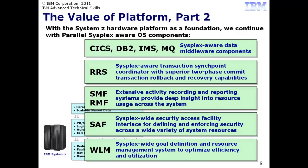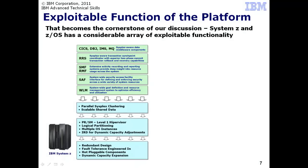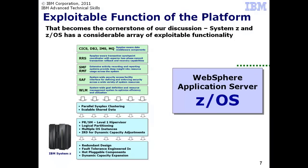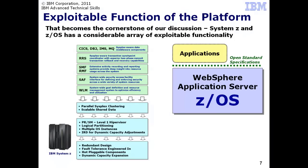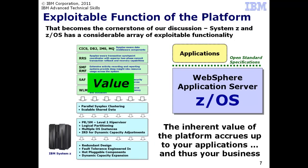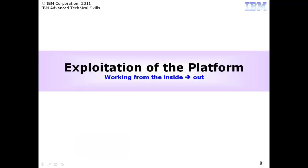RRS provides a mechanism for the efficient logging of transaction participation as well as a powerful ability to recover quickly from failed transactions. Finally, on top of all that are the key ZOS data subsystems that are the workhorses of industry today: CICS, IMS, DB2, and MQ. The inherent value of the platform accrues up to the applications running on WAS-ZOS and thus the value accrues to your business as well.